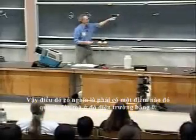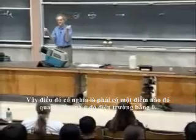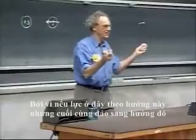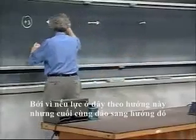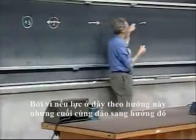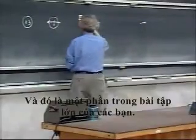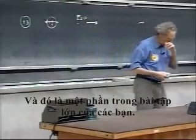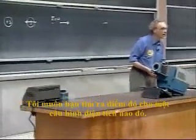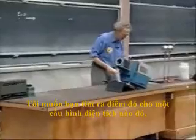So that means there must be somewhere here a point where the E field is zero. Because if the force is here in this direction, it ultimately turns over in that direction. There must be somewhere a point where E is zero, and that is part of your assignment. I want you to find that point for a particular charge configuration.